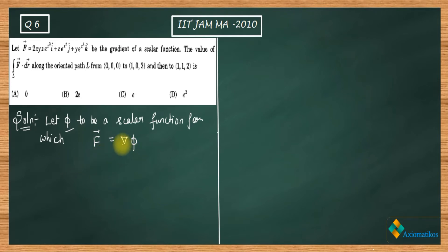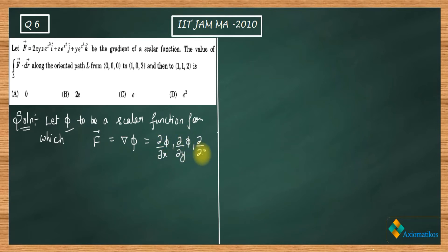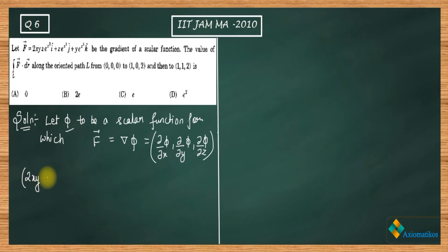What will be del phi? Del phi will be the partial derivatives with respect to x, y, and z of phi — that is the gradient. Now what is given: f vector equals (2xyz·e^(x²), z·e^(x²), y·e^(x²)).